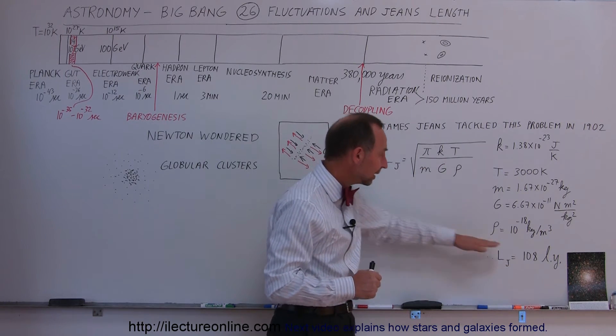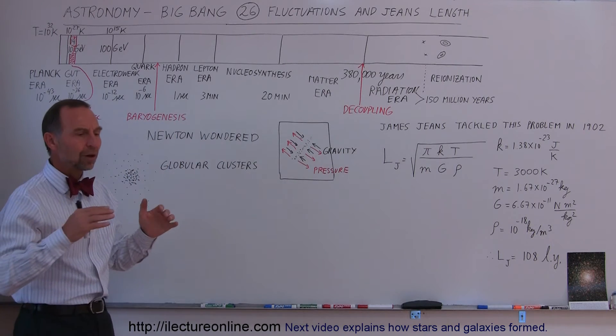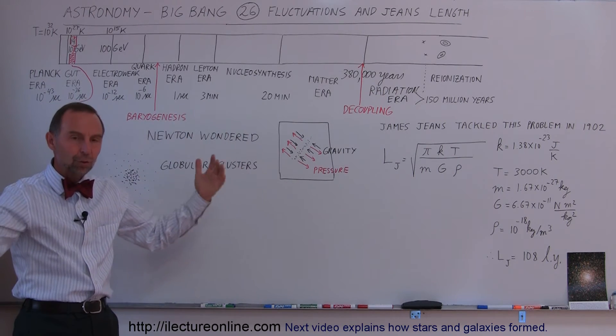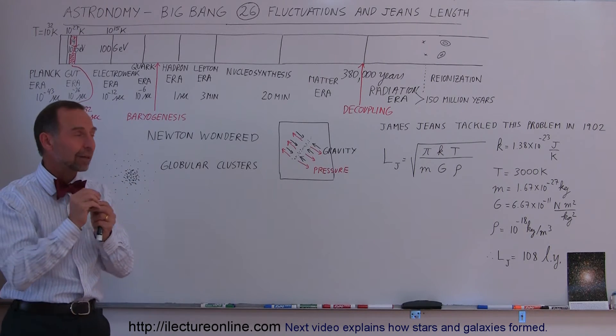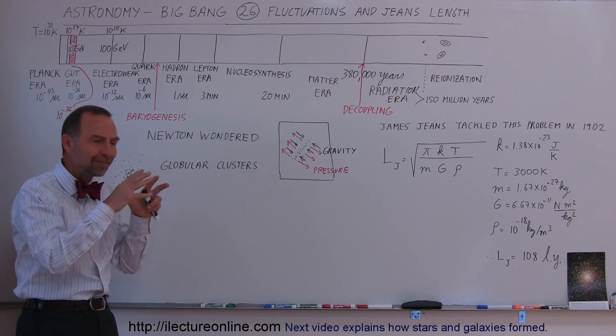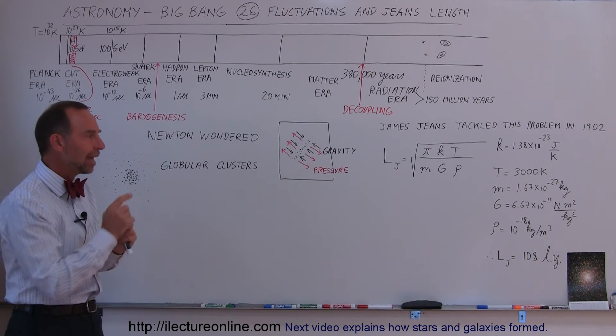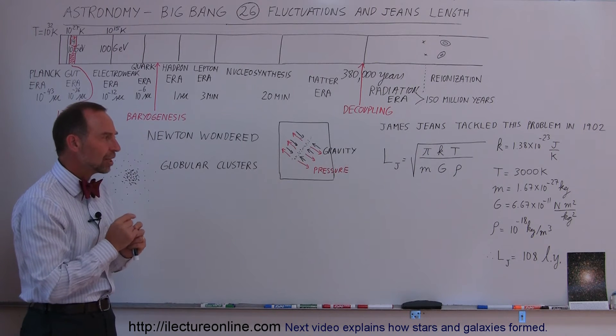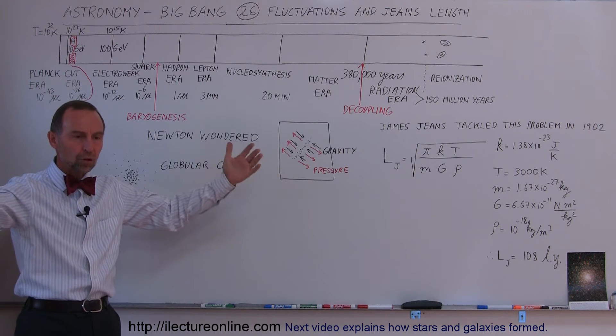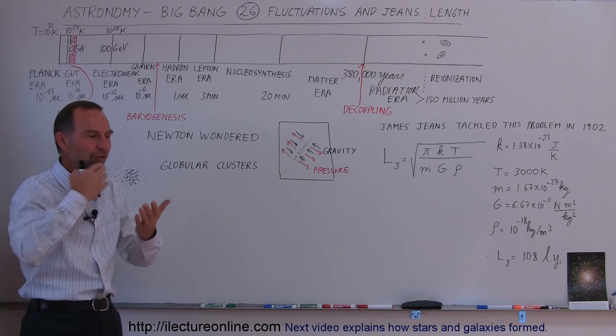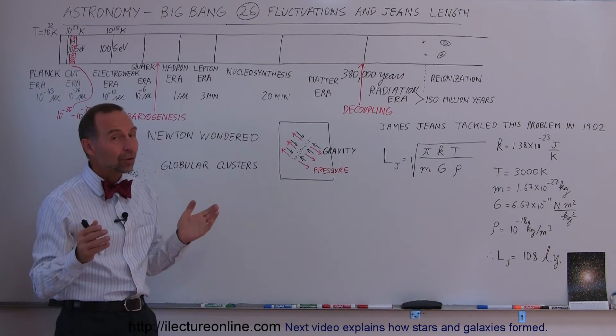And Jeans length from that calculated was 108 light years. So what they figured was that in regions where the density of the universe was greater than other regions, and we already know from studying the background radiation very carefully that there were these density fluctuations in the universe. Some regions that were slightly more dense, some regions that were slightly less dense. And because of Jeans' calculation here in his equation, we're actually able to calculate that the size of the region where something could coalesce, where stars could form, had to be about 108 light years across.